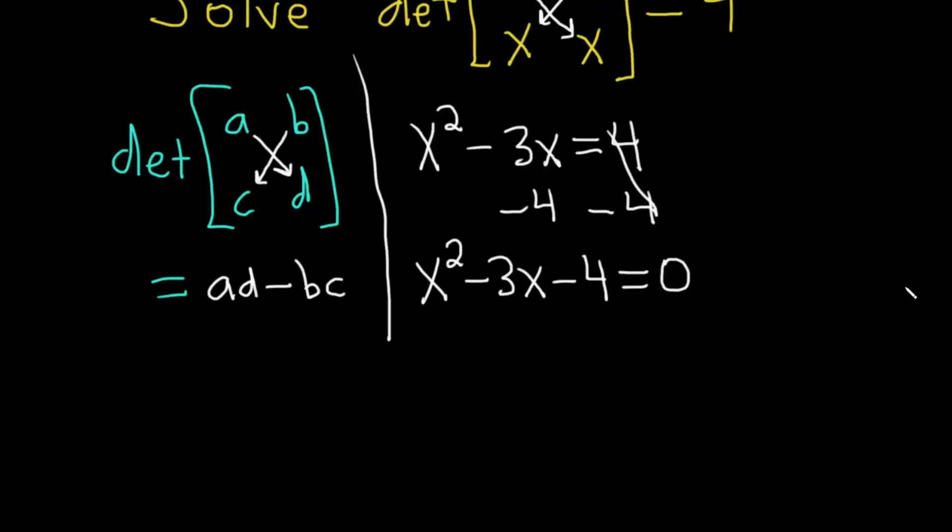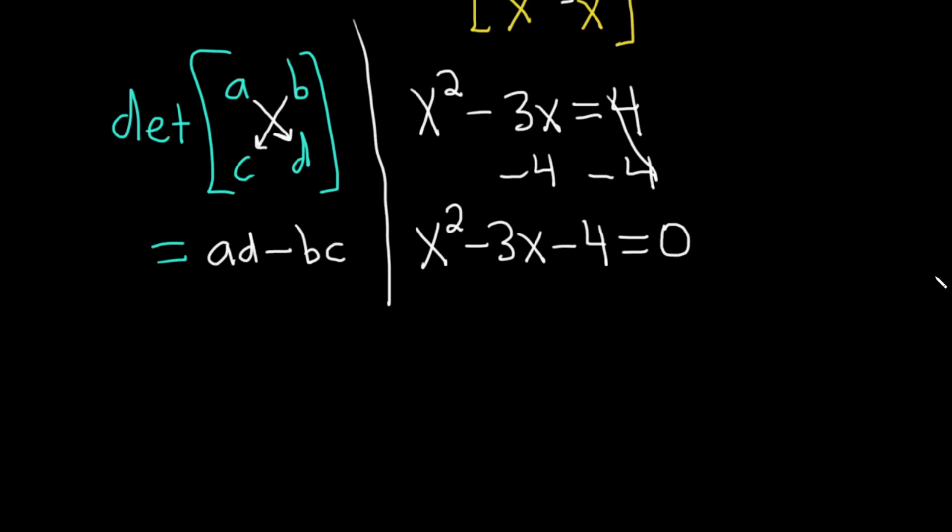Hopefully this factors. I'm going to try to factor it by guessing. Because we have an x squared here, it might look something like x times x equals 0. Now we need two numbers that multiply to negative 4 but add to negative 3. So 1 times 4 is 4, let's make the bigger one negative: minus 4 plus 1.